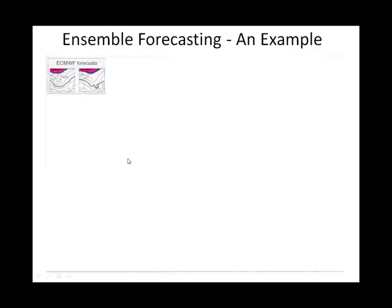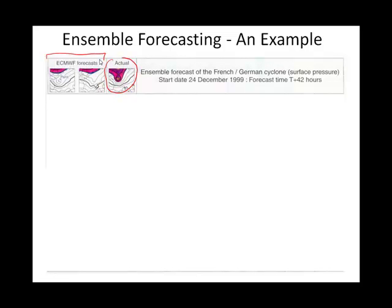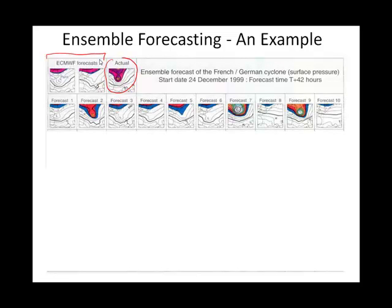This is the forecast their region put out for Christmas Eve 1999 — and it's a fairly calm forecast. But this is what actually happened. Basically, they got it wrong. The question is: if we had taken the initial conditions and generated an ensemble of 50 forecasts with slightly differing initial conditions, what would it have looked like? So here we go — looking to see if we do get that nasty weather.